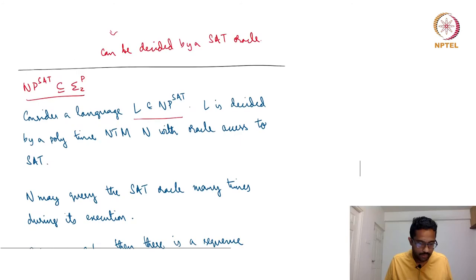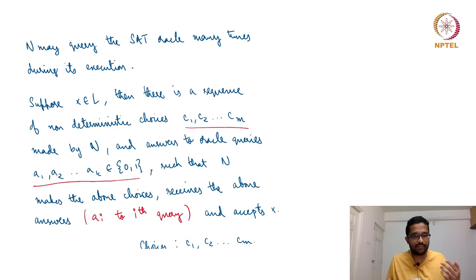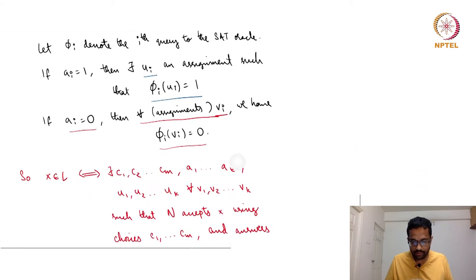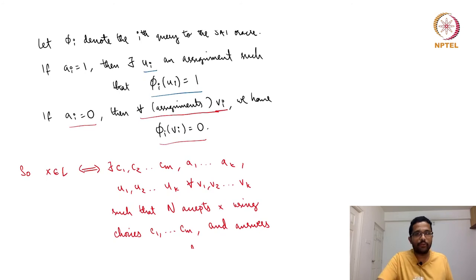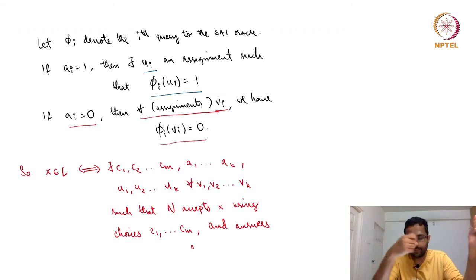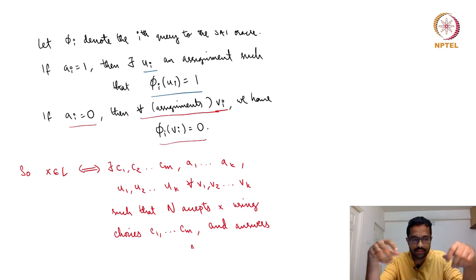The goal is to show that L is in Sigma_2. We started with L in NP^SAT — the machine makes non-deterministic choices and receives yes/no oracle answers. Now we need to write these things in a formal logical sense, and that will start looking like a Sigma_2 language.